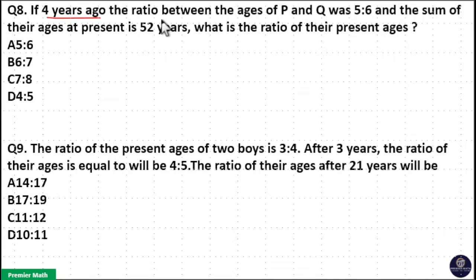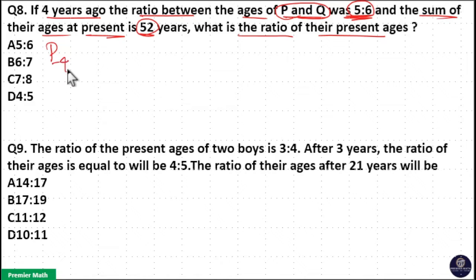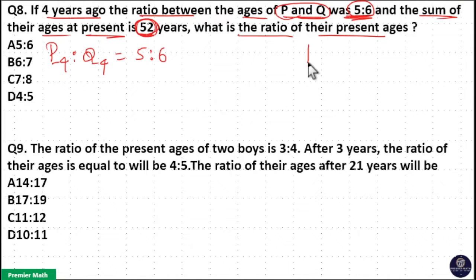If 4 years ago the ratio between ages of P and Q was 5 is to 6 and the sum of their present ages is 52 years, what is the ratio of their present ages? Here, 4 years ago means P minus 4 is to Q minus 4 equals 5 is to 6. The sum of their present ages P plus Q is 52 years.